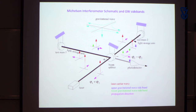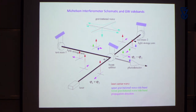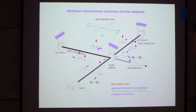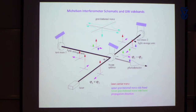You arrange it so that the time it takes light to go from the beam splitter to the mirror and back on one side is exactly the same as the time for the other side. If you make those equal, it turns out no light gets to the photo detector — none. Equal path lengths on the two sides means no light goes to the photo detector; it all returns back to the laser.